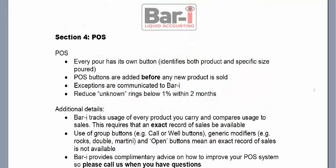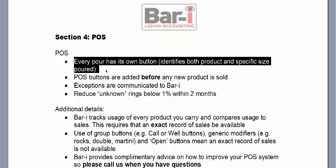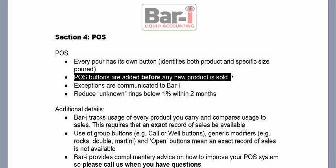Now we'll go into a little more detail on the point of sale. The POS is how we account for what was sold — we match up sales against usage. The number one rule is that every pour has its own button. We use the expression 'one drink, one button,' meaning every single drink has its own dedicated button. It needs to identify both the product and the specific size of the pour. If a Jack Daniels button is used for both a regular cocktail at one and a half ounces and a rocks pour which is larger, that's a problem — you're not charging the correct amount and there's no precise record of how much was sold.